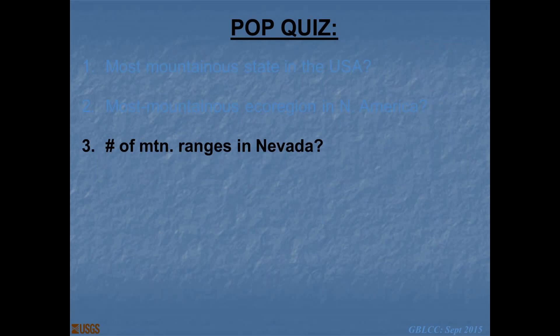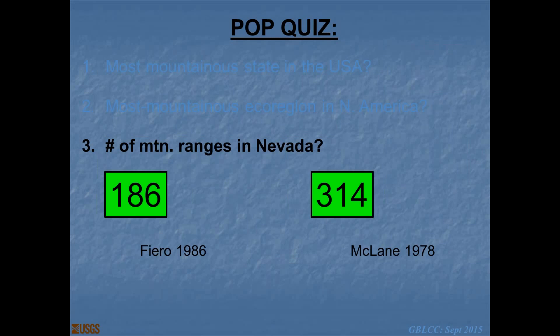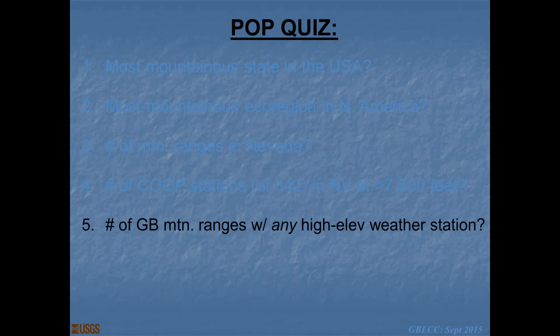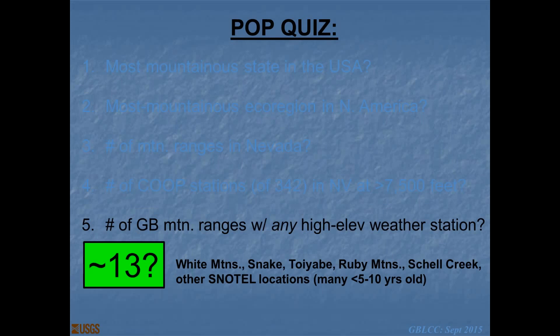How many mountain ranges are there in Nevada? Depends on who you ask. Geology of the Great Basin said 186. McLean in his Silent Cordilleras said 314. How many co-op weather stations out of 342 in Nevada exist at elevations above 7,500 feet — a commonly used definition of alpine? Four. How many of those are still in existence? Zero. How many Great Basin mountain ranges have any kind of high elevation weather station? Out of those 314 in Nevada alone, I'm aware of about 13, many of which have been in existence for just a few years.